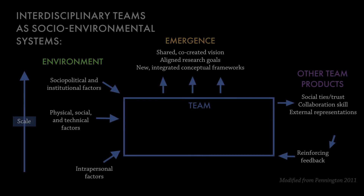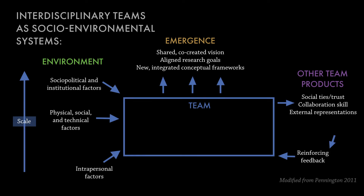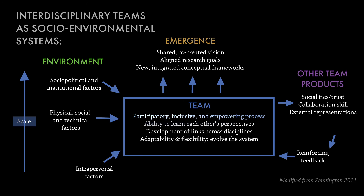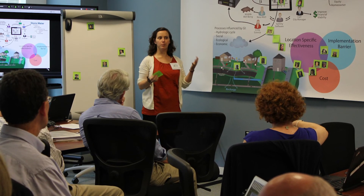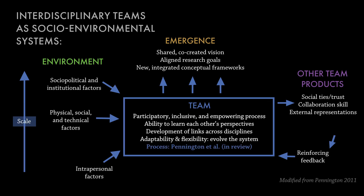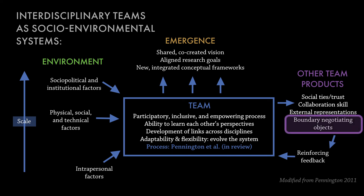This connects to the diagram from part one where I talked about teams as distributed cognitive systems. The team process includes participation, learning, and identifying links across disciplines — instead of immediately asking 'what's the research,' we try to find linkages first. We know we have to evolve the shared vision, and that takes time and people willing to be adaptable. The hoped-for outcome is the emergence of a shared co-creative vision and integrated conceptual frameworks. What I did not highlight before is that boundary negotiating objects are critical for providing a path forward.